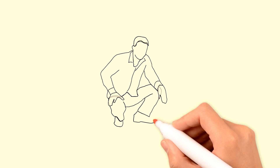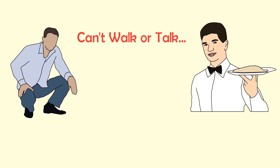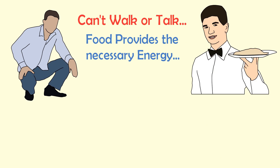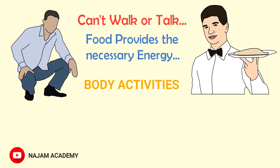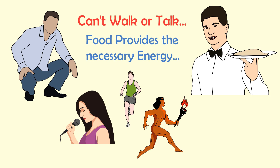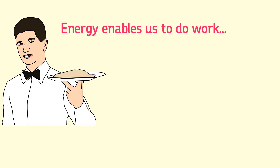For example, when you are hungry, you do not even walk or talk properly. But after eating food, you can talk or walk properly, because the food you eat provides the necessary chemical energy for your body's activities, and your body converts this chemical energy into other useful forms of energy like sound energy, kinetic energy, heat energy, etc. Remember that energy enables us to do work.